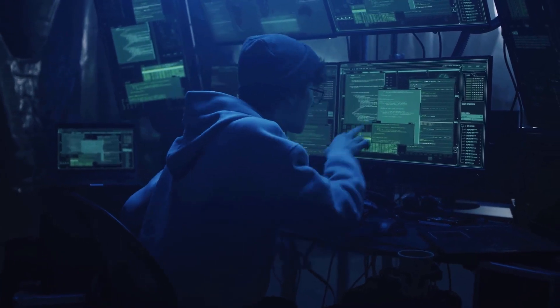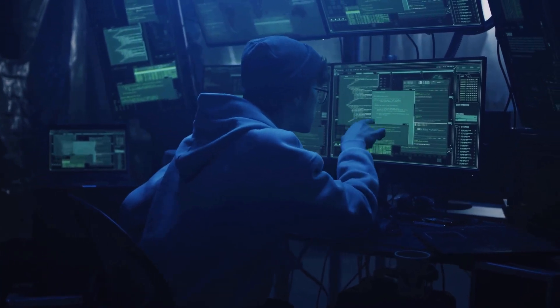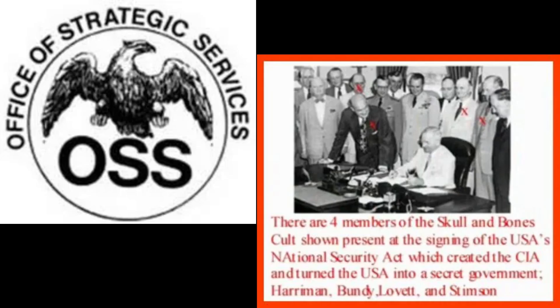Origins and Creation of the CIA. The origins of the CIA can be traced back to World War II, when President Franklin D. Roosevelt established the Office of Strategic Services, OSS, in 1942 to conduct intelligence and special operations activities. The OSS, led by William J. Donovan, played a crucial role in the war effort by gathering intelligence, conducting espionage, and engaging in covert operations.